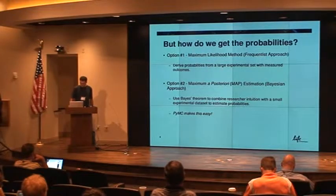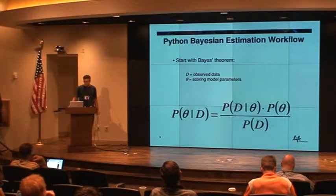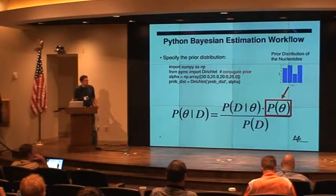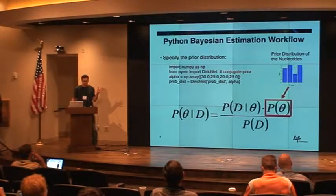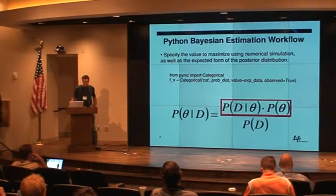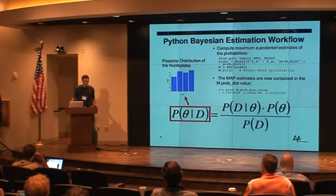PyMC makes this really easy. The workflow for Bayesian estimation with Python using PyMC: you start with Bayes' theorem, you put up the prior distribution of the parameters you're trying to use in your model, and those parameters will be the researcher intuition. This is the code to do that. Then you specify the experimental data you have, and then you tell PyMC which term to maximize, and out comes a posterior distribution, which you can plug into your models, and it will be a better parameter estimate than you would have had.